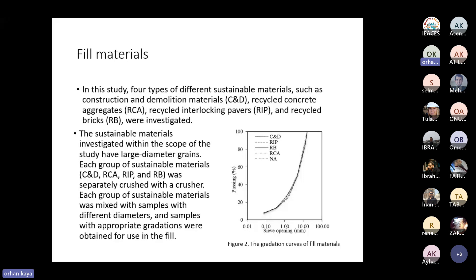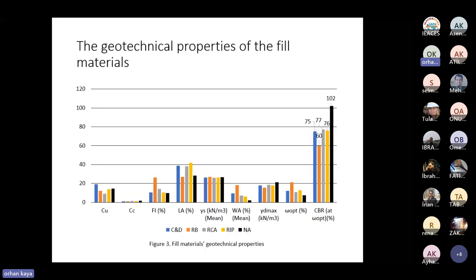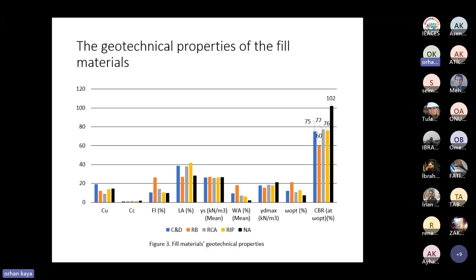Geotechnical laboratory tests including flatness index, Los Angeles abrasion, pycnometer, water absorption, and compaction tests were performed on sustainable materials and natural aggregates. CBR tests were also carried out on fill materials at optimum water content and maximum dry unit weight. The results, together with gradation properties, are shown in Figure 3. The fill materials were classified as well-graded gravel (GW) in this study.